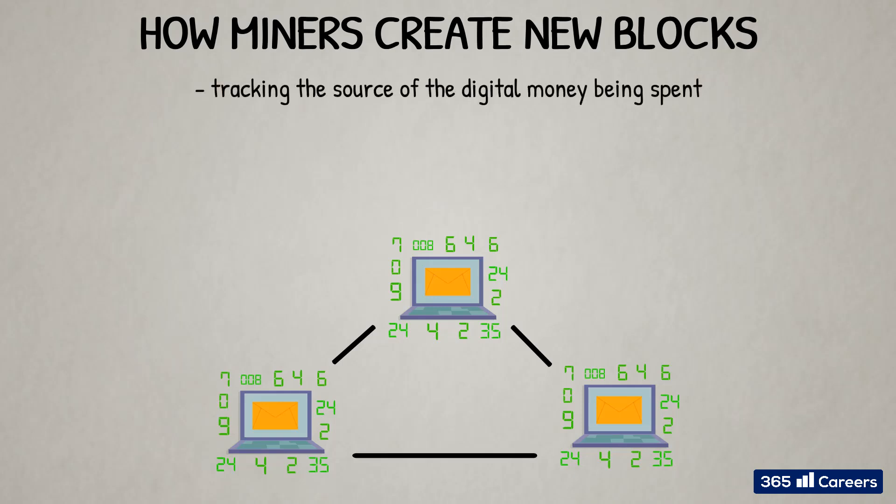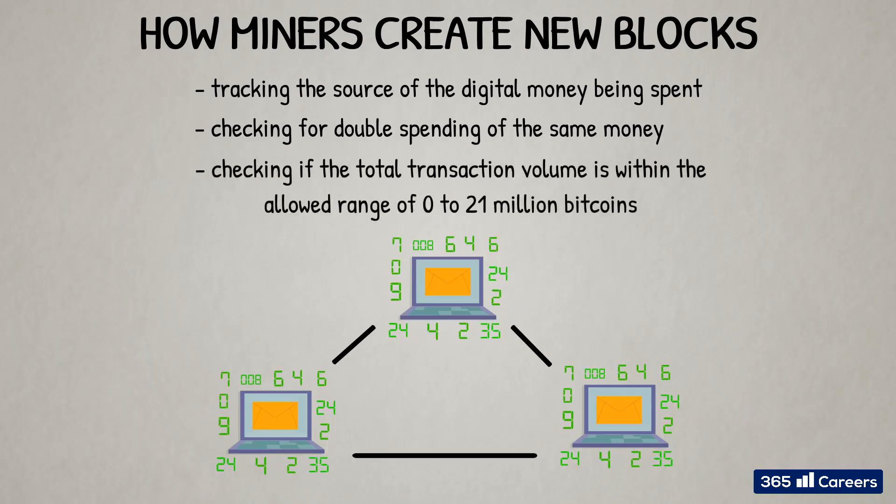Including tracking the source of the digital money being spent, checking for double spending of the same money, checking if the total transaction volume is within the allowed range of 0 to 21 million bitcoins, as 21 is the maximum total supply of Bitcoin allowed by the system. And the list goes on. The Bitcoin software installed on the node performs a number of other checks and balances.